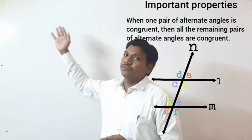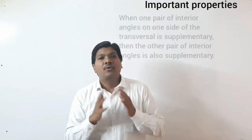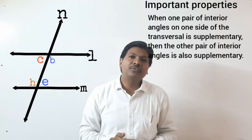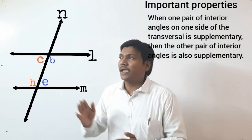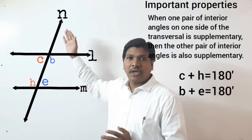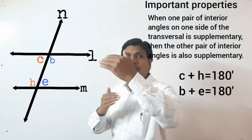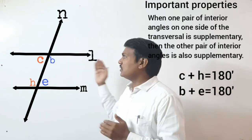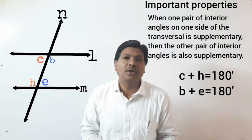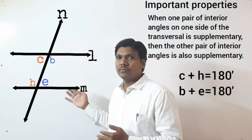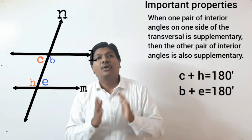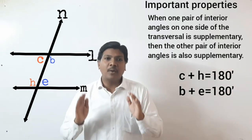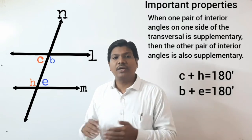The fifth property: when one pair of interior angles on one side of the transversal is supplementary, then the other pair of interior angles on the same side of the transversal is also supplementary.